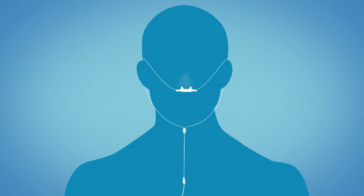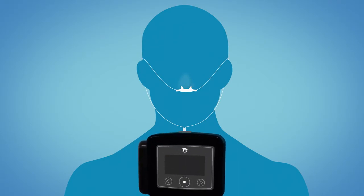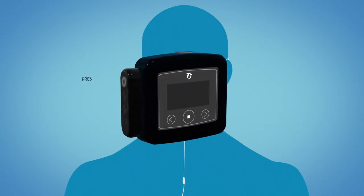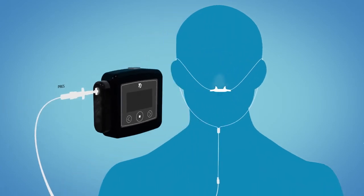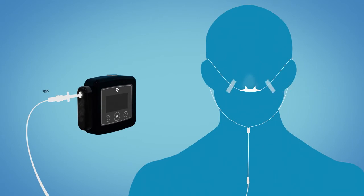Take the other end of the cannula and connect it to the side of the T3 device by pressing the end into the pressure input on the device. Put a little piece of tape on the cannula on either cheek to hold it securely in place.